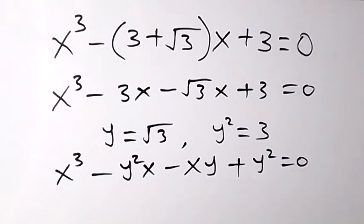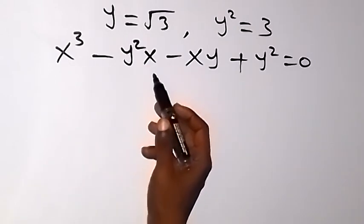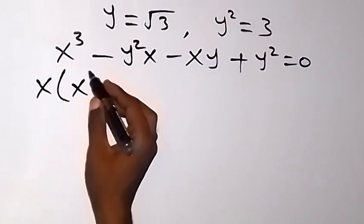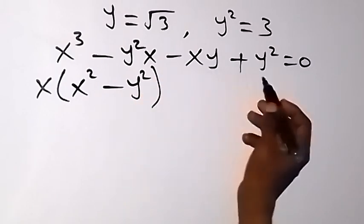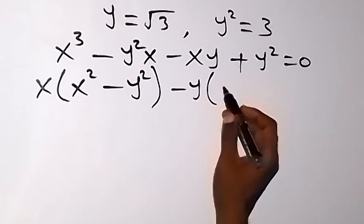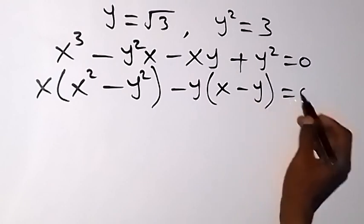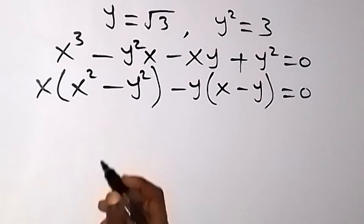From here, when we group this — grouping into 2 — we have what is common between x raised to power 3 and y squared x. We can take x out from here, and we are having x squared here, then minus y squared. And from here, what we have is minus y out, and what is left is x, then minus y, equals to 0.